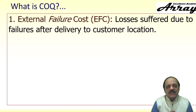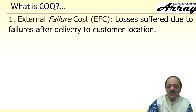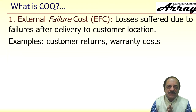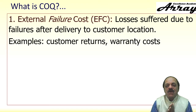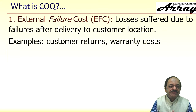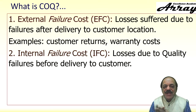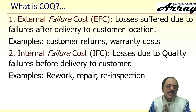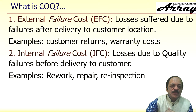External failure cost is defined as losses suffered due to failures after delivery to the customer location. Examples are customer returns and warranty cost — you have to attend to a customer's warranty call at your own cost and rectify the defects, which is a money loss for the organization. Internal failure cost is defined as losses due to quality failures before delivery to the customer, meaning within the factory itself. Examples are rework, repair, and re-inspection — re-inspection is also a huge money loss.